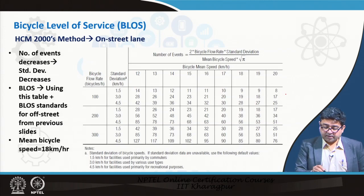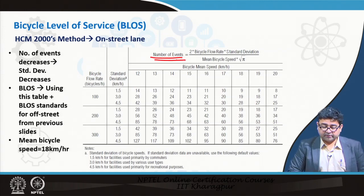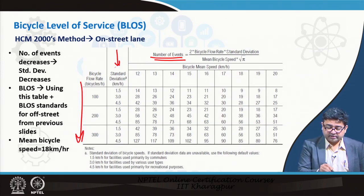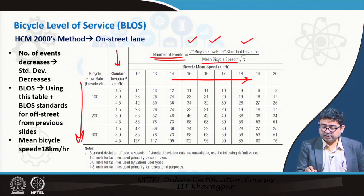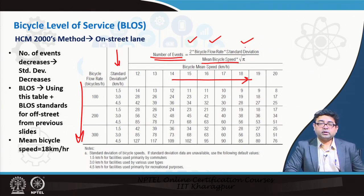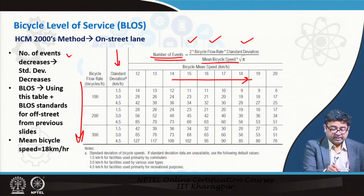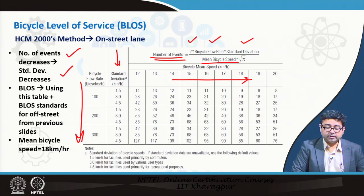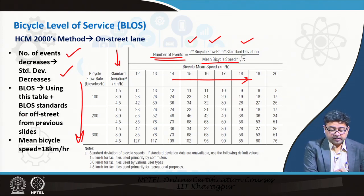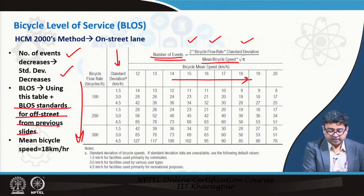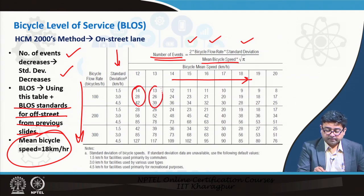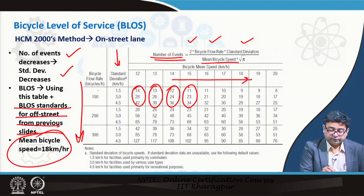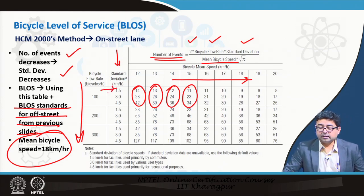For on-street lanes, the number of events is given by 2 times the bicycle flow rate times the standard deviation, divided by the mean bicycle speed times pi. As the number of events decreases, the standard deviation of speed also decreases. The bicycle level of service uses this table along with the BLOS standards for off-street paths from the previous slide, with a mean bicycle speed of 18 kilometers per hour assumed.